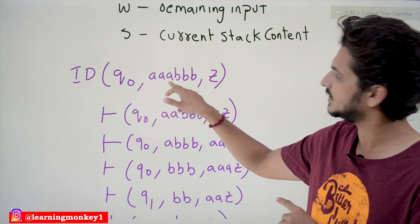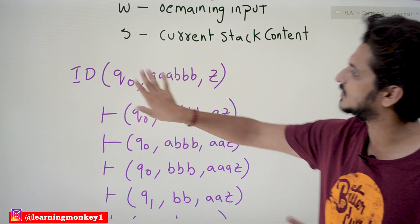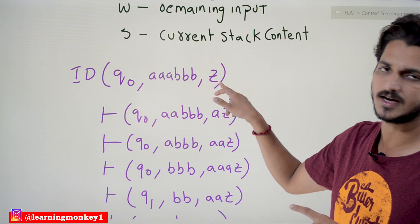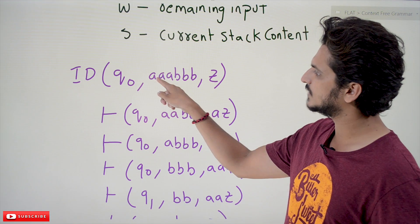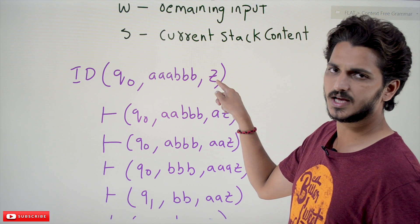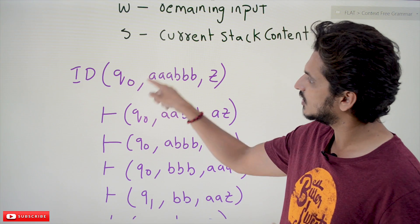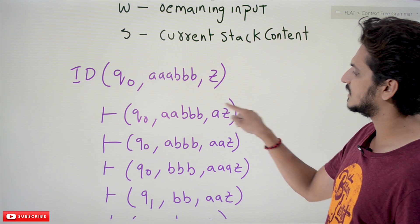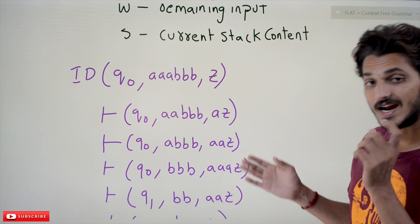Take an example on this pushdown automata. The instantaneous description starting at q₀ with input string 'aaabbb' and stack content Z is: (q₀, aaabbb, Z). To process, take the first input symbol 'a'. On q₀, input 'a' with stack top Z means we push 'A' onto the stack and stay on q₀. So we get (q₀, aabbb, AZ) — the stack content now consists of AZ.